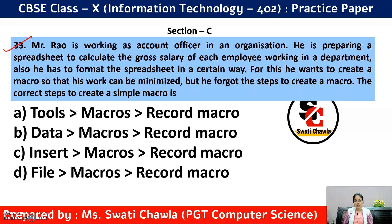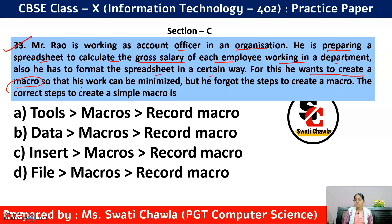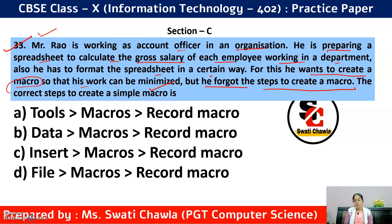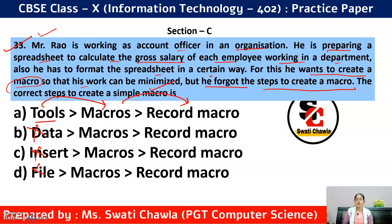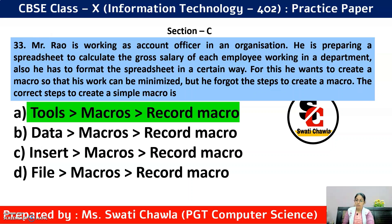Question 33: Mr. Rao is an account officer preparing a spreadsheet to calculate gross salary and wants to create a macro to minimize his work, but he forgot the steps. To create a macro, go to Tools menu, then Macros, and then we have the option of Record Macro to record a macro. Options B, C, and D are incorrect. That's all for this third mock test.